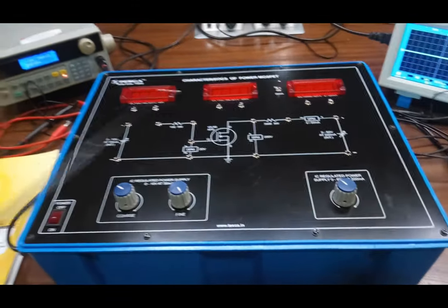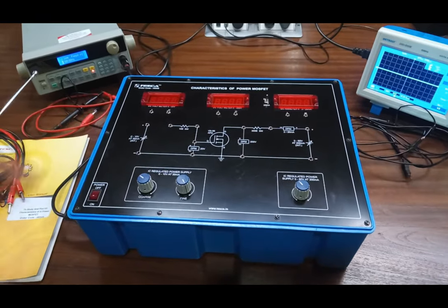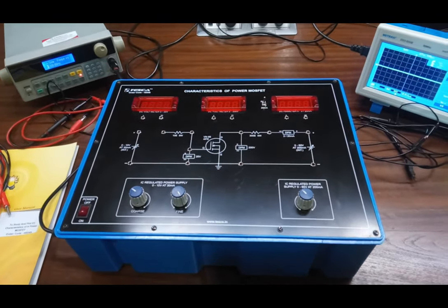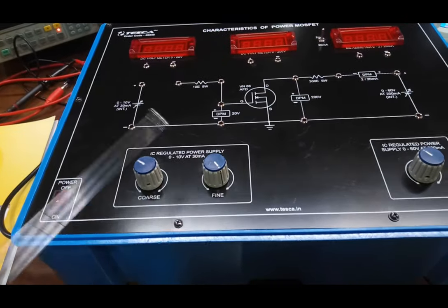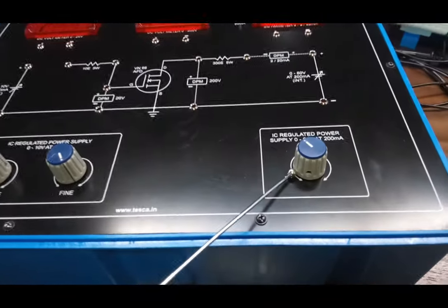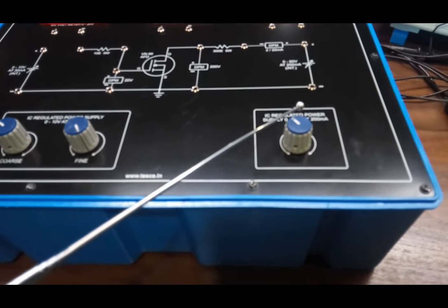In this trainer kit, this is the circuit diagram printed for the help of students to understand the characteristics. This is the circuit diagram printed for the power MOSFET. These are the IC regulated power supplies which is 0-10V at 30mA, and this is also IC regulated power supply which is 0-60V at 200mA.